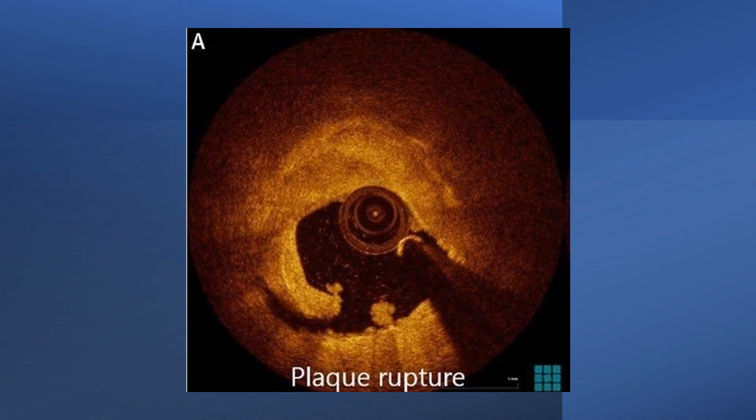We all know that acute coronary syndrome is mostly caused by a plaque rupture. Of course, there are other causes including plaque erosion and calcified nodule, but the majority are caused by a plaque rupture. When the plaque ruptures, a small part of the intima is displaced. This part could be very large in ulcerative plaque.